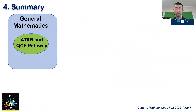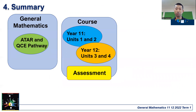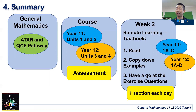To summarize: General Mathematics is important because it provides an ATAR and QCE pathway. In year 11 you do units one and two, and in year 12 you do units three and four. Assessments — we'll talk about those once you come back to school. In week two, next week, it's remote learning from the textbook. Year 11, try sections 1A to 1C; year 12, sections 1A to 1D. Read the sections, copy down the examples step by step very carefully, then have a go at the exercise questions, and try one section each day.